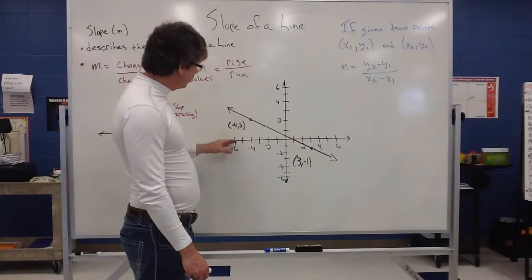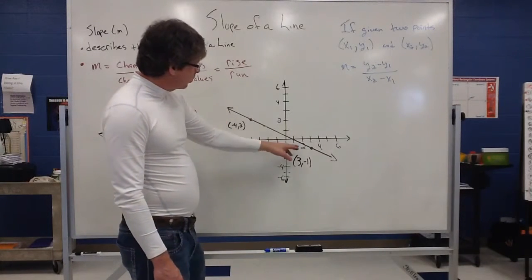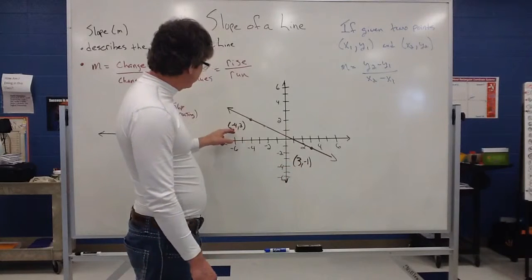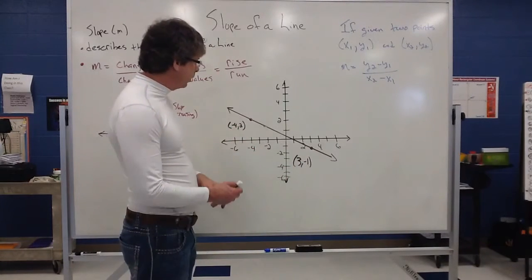This next example, I have the ordered pairs (3, -1) and the ordered pair (-4, 2). Those are my two points.